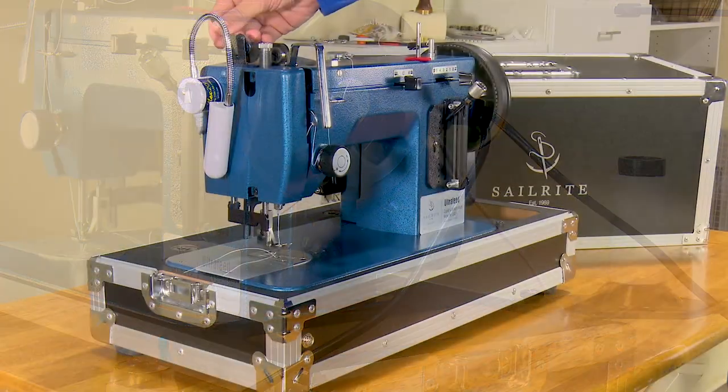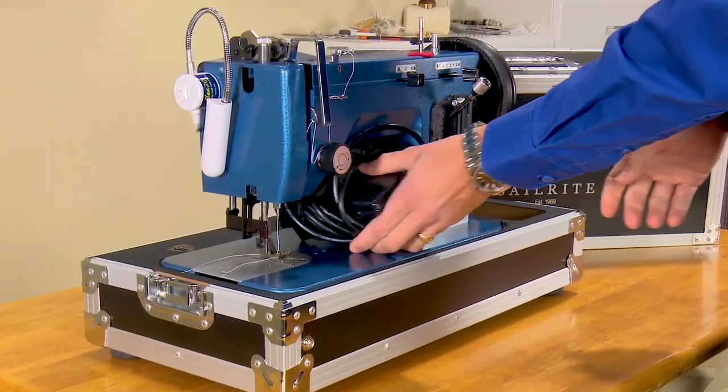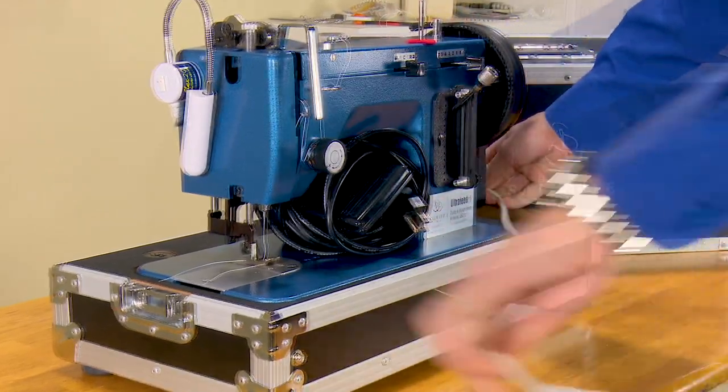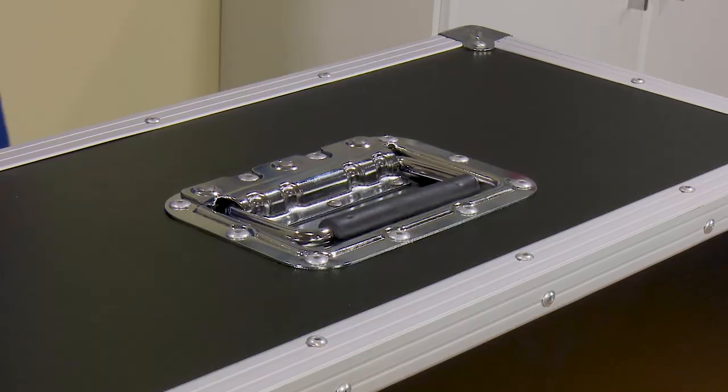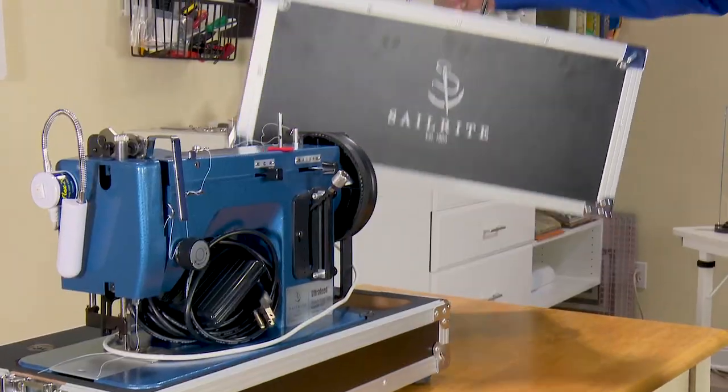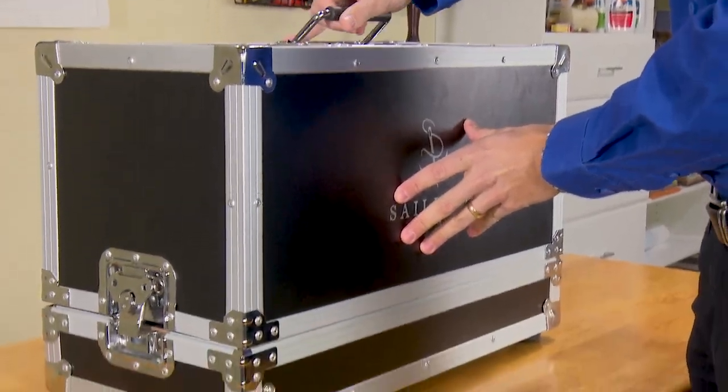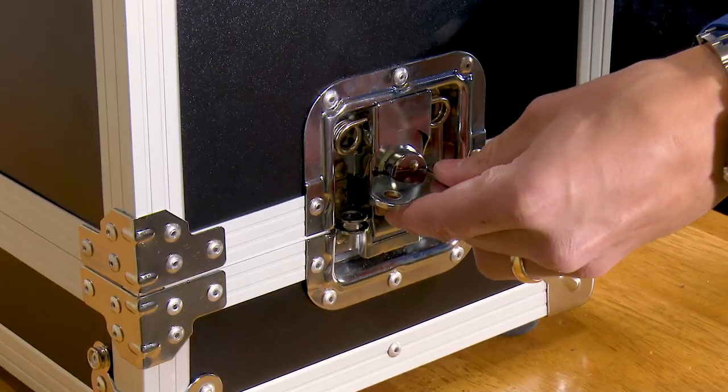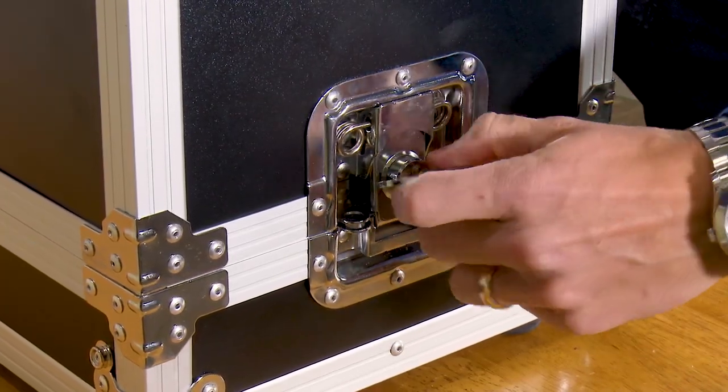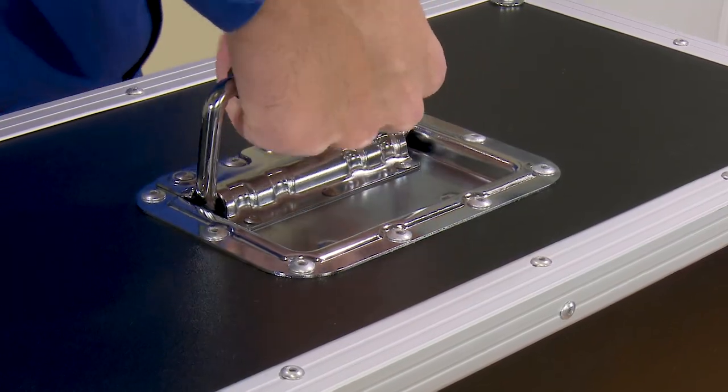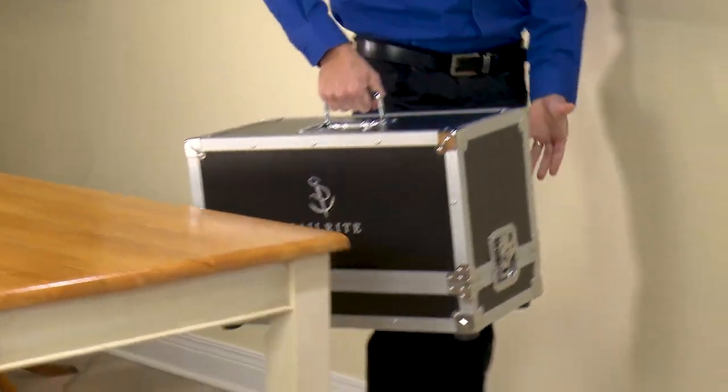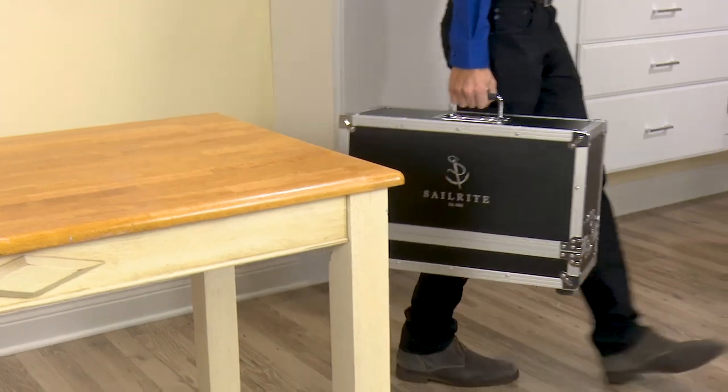The industrial carrying case comes in a durable reinforced case top designed for storing and carrying your Ultrafeed. The case is framed with aluminum edges and the corners are reinforced with a zinc alloy. The lid attaches securely to the base via butterfly latches and features an industrial grade spring loaded handle that makes it easy to carry your Ultrafeed anywhere.